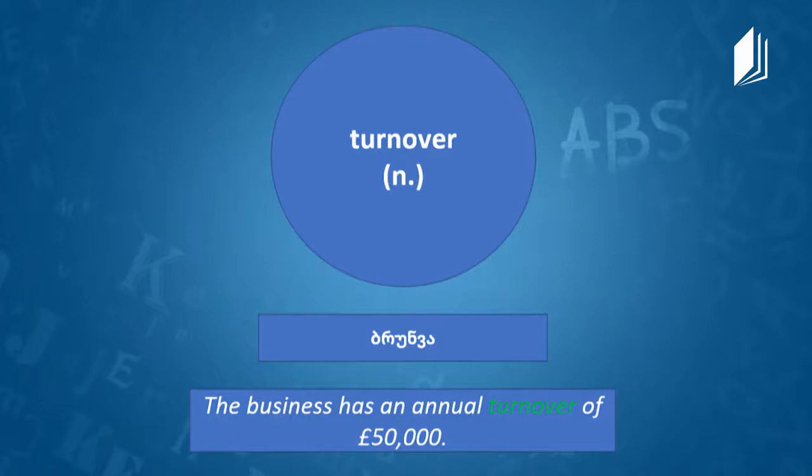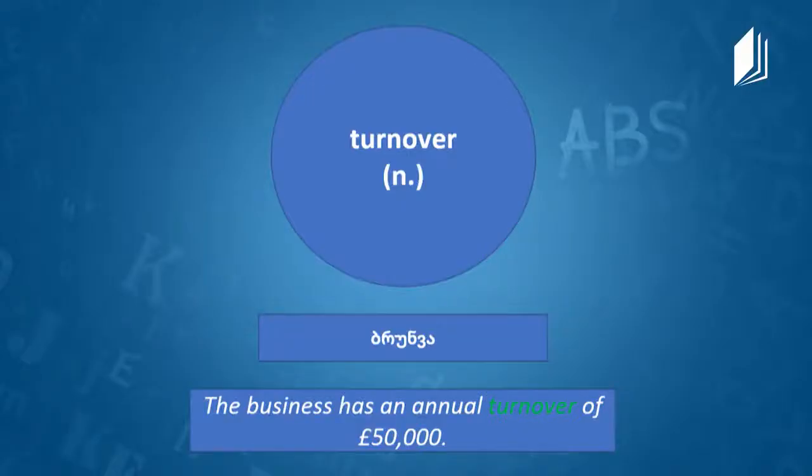Turnover is a noun, and in Georgian it is 'Brunva.' Turnover is the amount of business or profit that you make within a certain specific amount of time. For example: 'The business has an annual turnover of 50,000 pounds.' Good business!